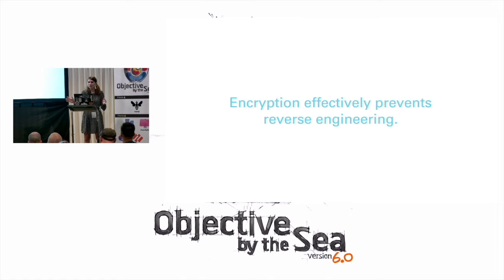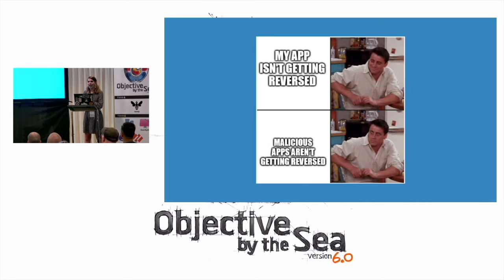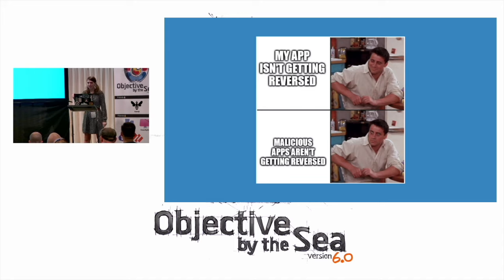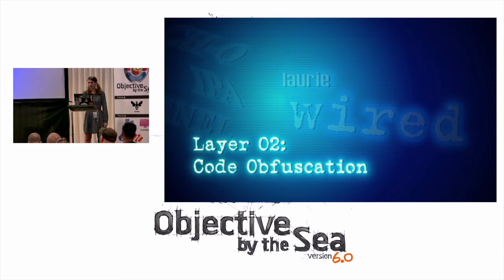Does anybody see any problems with this methodology? iOS developers think their applications are not getting reversed, which is true. However, that might make you think maybe the malicious applications are also not getting reversed by reverse engineers because they can't even get the application binaries. But now we'll move on to the next layer of obfuscation, where we've been able to get the binary and we're able to start our actual reverse engineering process.